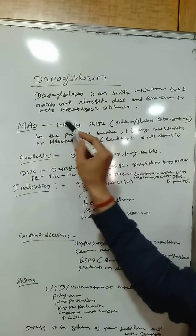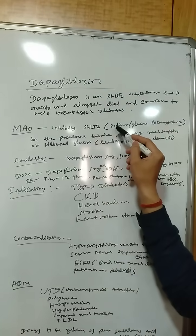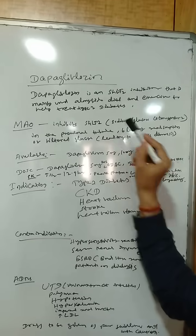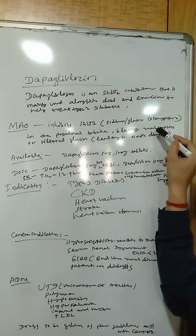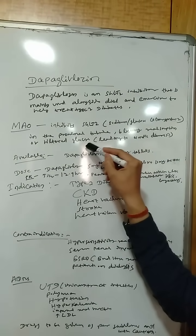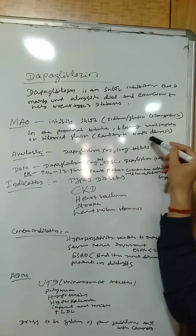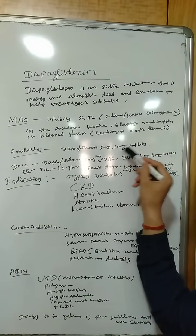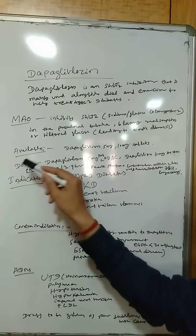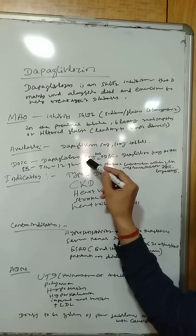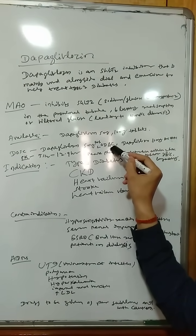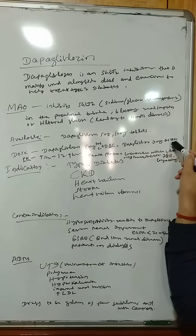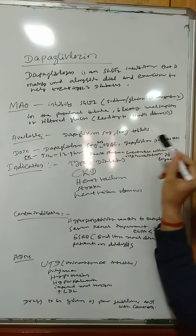Coming to the mechanism of action, it inhibits SGLT2, that is Sodium Glucose Co-Transporter 2, in the proximal tubule, blocking reabsorption of filtered glucose leading to osmotic diuresis. It is available as Dapagliflozin 5mg and 10mg tablets. The dose is Dapagliflozin 5mg, 1 tablet once daily before food in the morning, and Dapagliflozin 10mg, 1 tablet once daily before food in the morning.